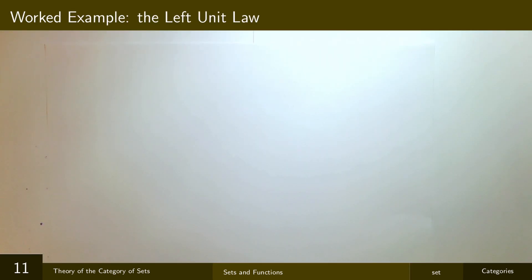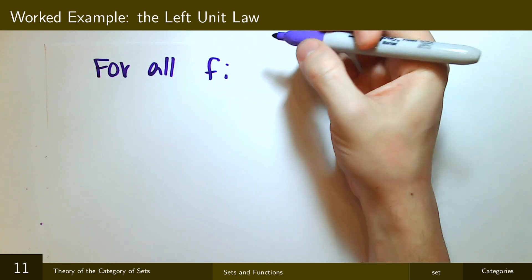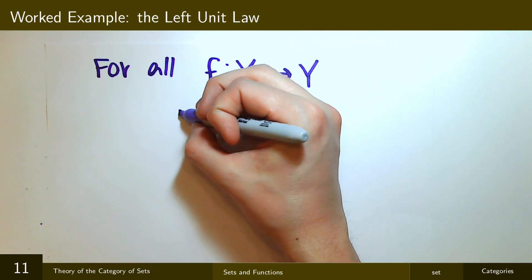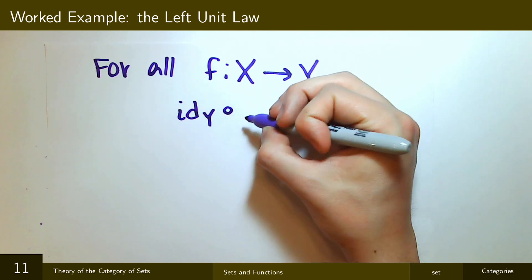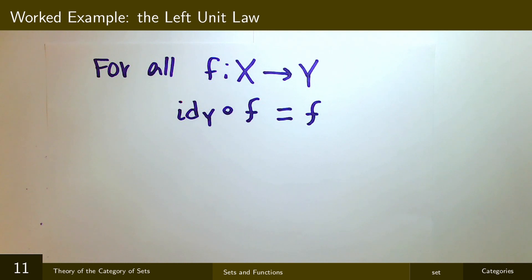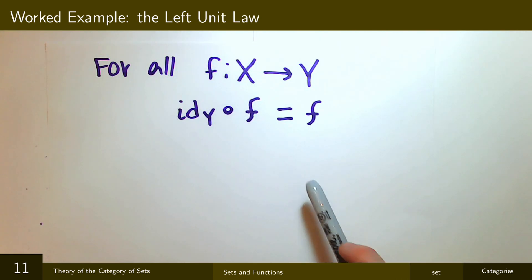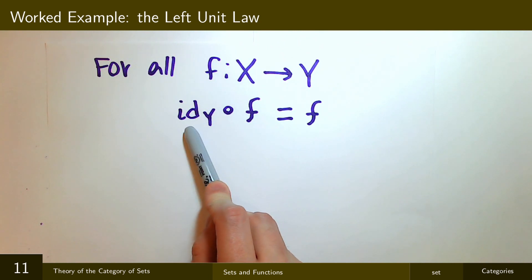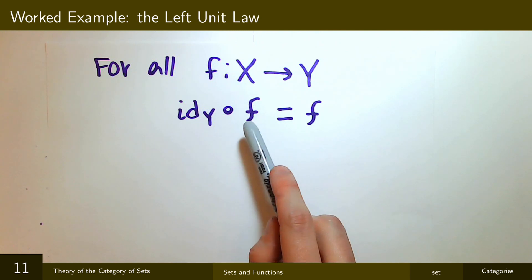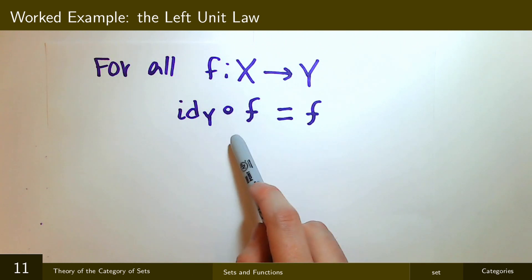So let me conclude this video by doing one of these examples. So I'll prove that for all functions f from some set X to some other set Y, that if I do the identity of Y composed with f, that's going to be the same thing as f itself. So the first thing here to check is that the domains and codomains work out. So f has domain X and codomain Y. And so in order for this composition to make sense, the identity of Y has to have the same domain as the codomain of f. And so the codomain of f is Y, and then the domain and codomain of the identity on Y is Y. And so this composition makes sense.